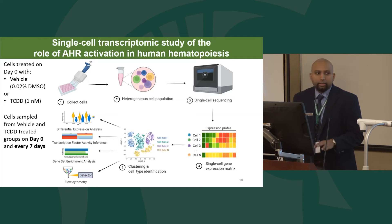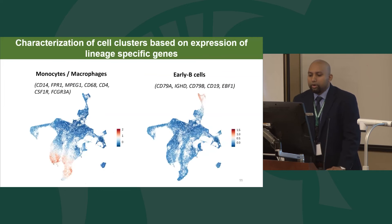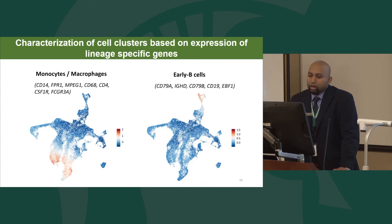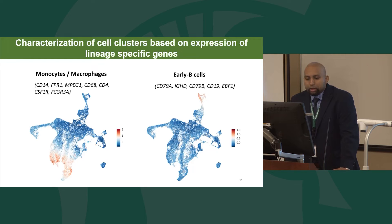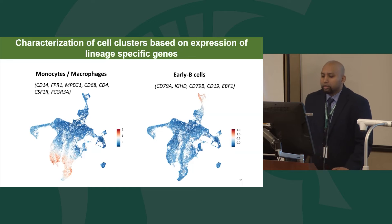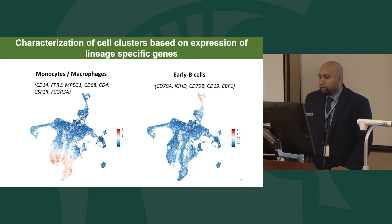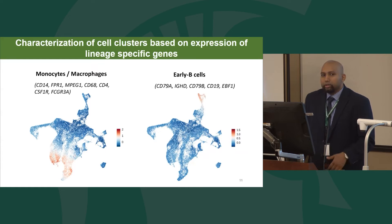Different clusters expressed different lineage marker genes. This UMAP is a composite of all cells collected over a 28-day period from both vehicle and TCDD-treated groups. Cells at the bottom expressed genes associated with monocytes and macrophages, while cells at the top expressed early B cell marker genes. In this manner, we clustered our dataset and identified cell populations in a semi-supervised manner based on the literature.